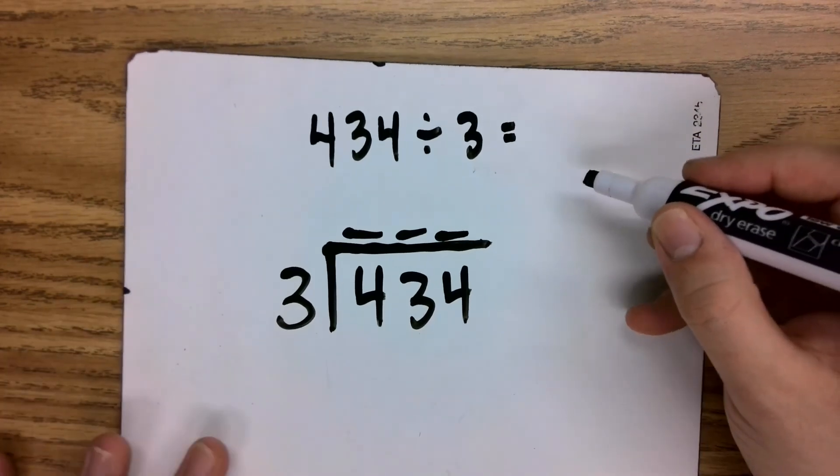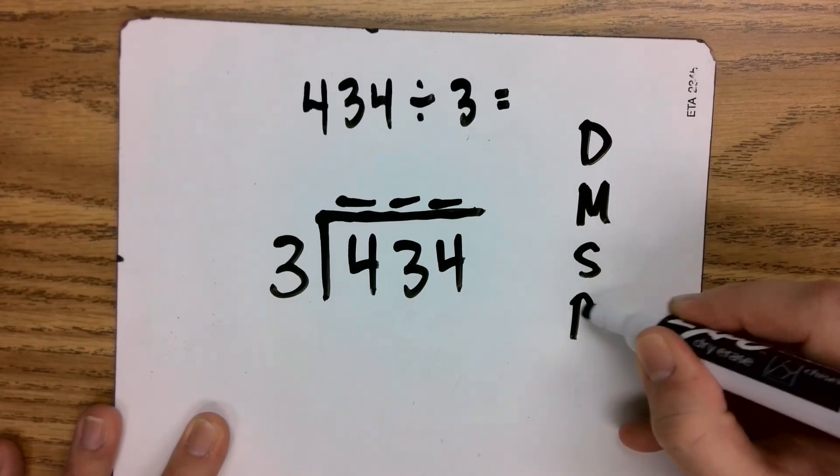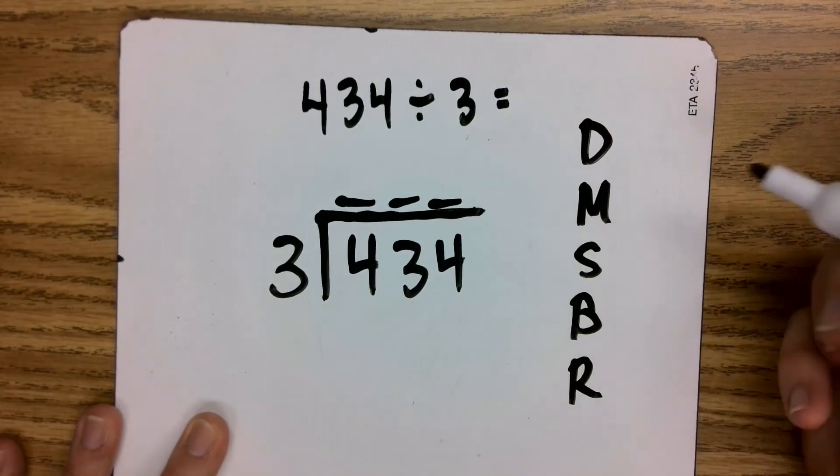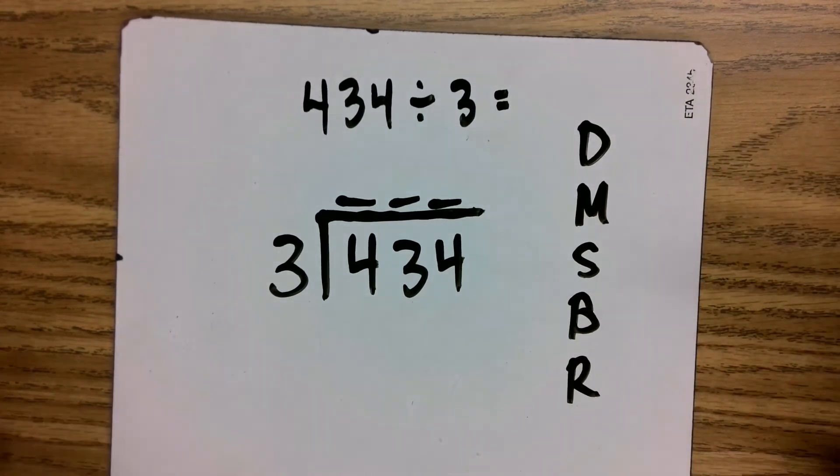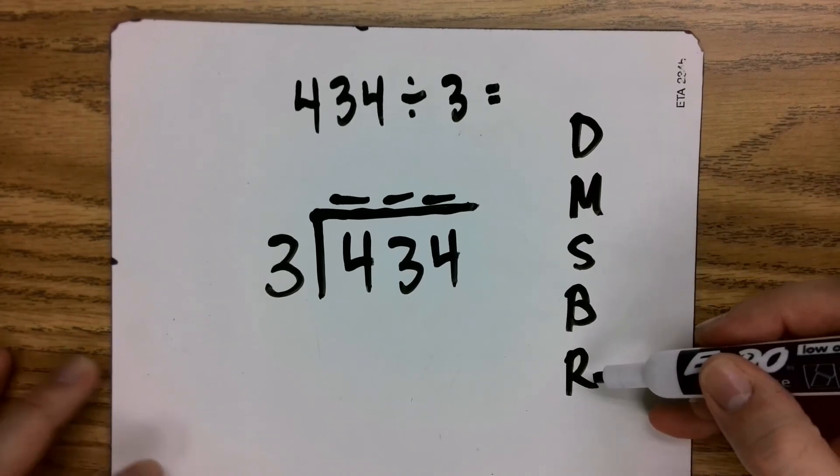These steps for division and long division are going to be divide, multiply, subtract, bring down, redo. Some people put a check in there. This is what I say: does Mr. Stewart bring roses? The answer is yes. Let's divide, multiply, subtract, bring down, redo or remainder.